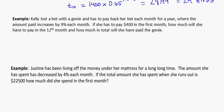Okay, looking at part two for geometric sequences. In other words, let's read these problems and see what we can get out of them. Kelly lost a bet with a genie and has to pay back her bet each month for a year, where the amount paid increases by 9% each month. So increasing by 9% each month, that screams out to me I know this is an increasing geometric series, geometric sequence.